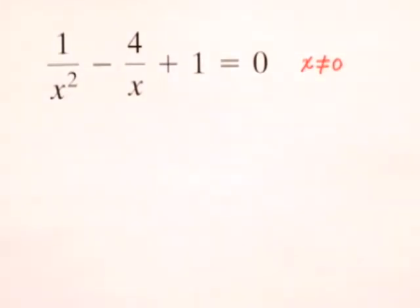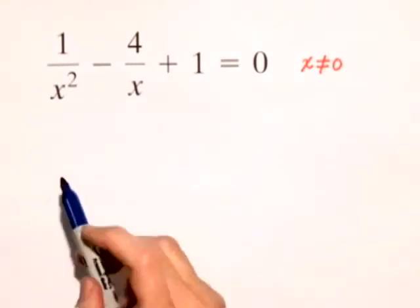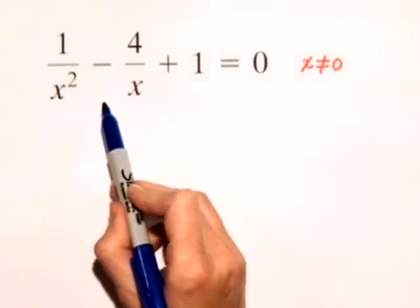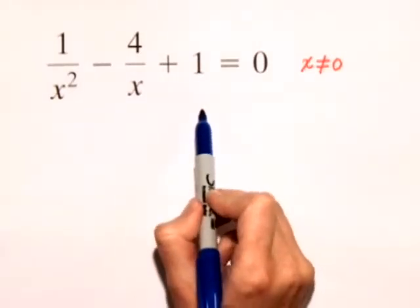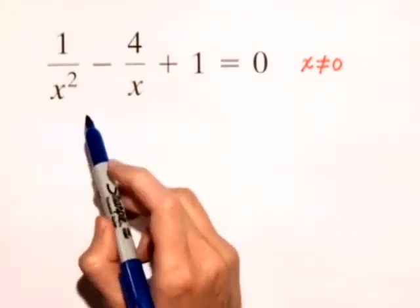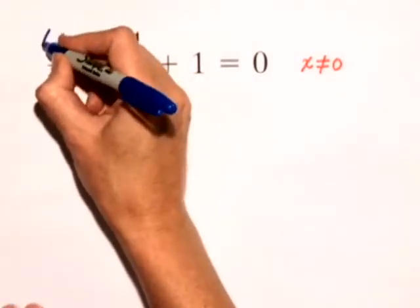Now, let's go about solving this rational equation. The best way to do this is to clear the fractions. And we can clear the fractions by multiplying both sides of this equation by what the least common multiple of x and x squared is, and that would be x squared.